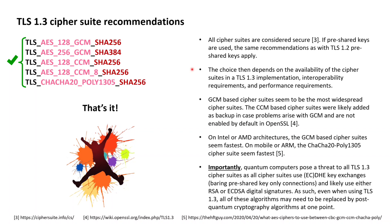Looking at availability and interoperability, the GCM block cipher mode based cipher suites seem to be the most widespread. The CCM-based cipher suites were added to TLS 1.3 as a backup in case issues would arise with GCM, and the CCM cipher suites are, for example, not enabled by default within OpenSSL.